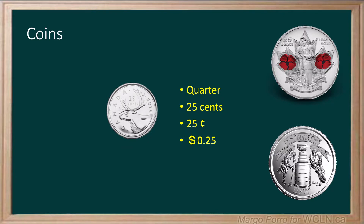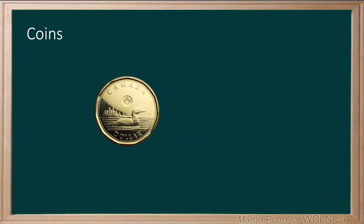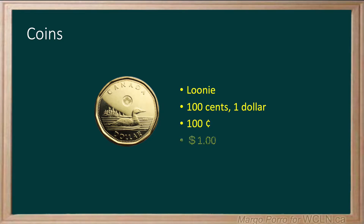Our one dollar coin is called a loonie, named after the loon. This coin has a value of 100 cents, which is equivalent to one dollar. Although it can be written using the cent sign, it is usually written with the dollar sign.